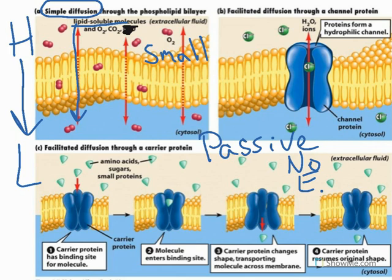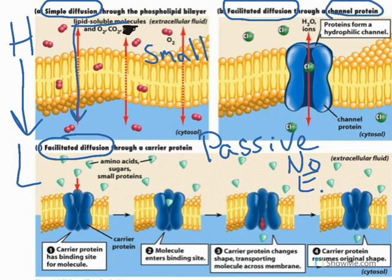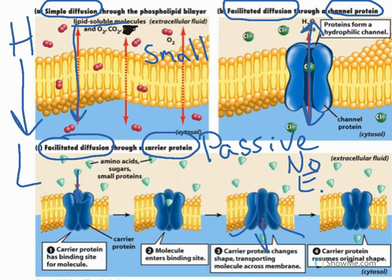The next type of passive transport is facilitated diffusion. There are two types of facilitated diffusion depending on whether the protein helping it is a channel protein — where the protein just forms a pore, a little channel for molecules to move through — or a carrier protein, where the protein undergoes a shape change. As the molecule comes in and binds, the protein flips open and the molecule is delivered to the other side of the membrane. All of these work in both directions; it really just depends on the concentration gradient, always moving from high to low concentration.